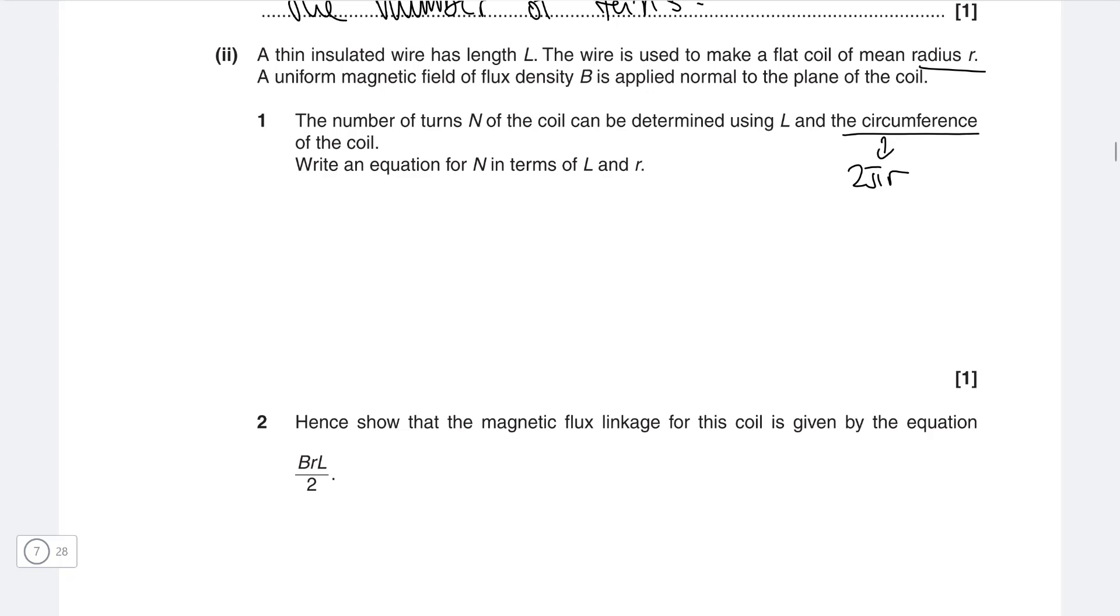If the coil has a number of turns, and the length of each individual coil is 2 pi r, and the original length was L before it turned into this coil, by dividing the two quantities we could find the number of turns. So n would be equal to the original length L divided by 2 pi r.